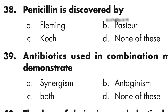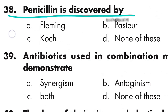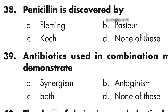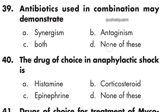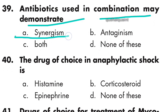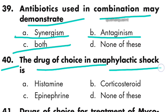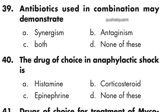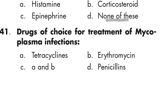Question 38: Penicillin was discovered by Alexander Fleming. Question 39: Antibiotics used in combination may demonstrate synergism and antagonism. Option C, both, is right. Question 40: The drug of choice in anaphylactic shock is epinephrine. Option C is right.